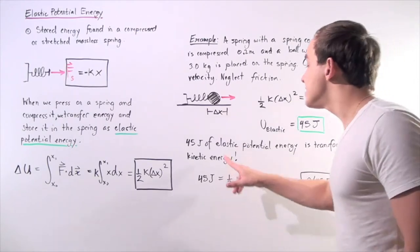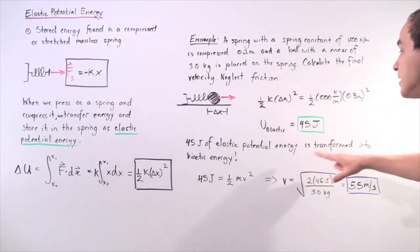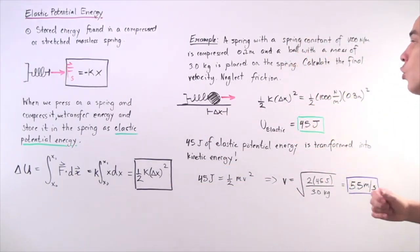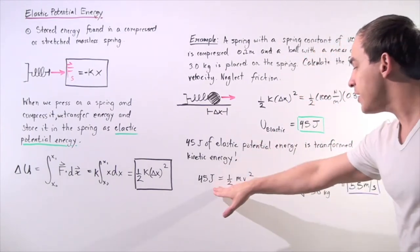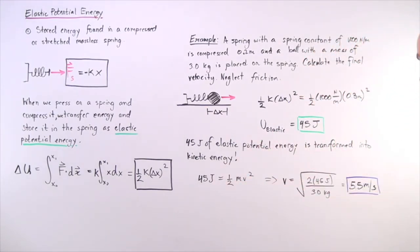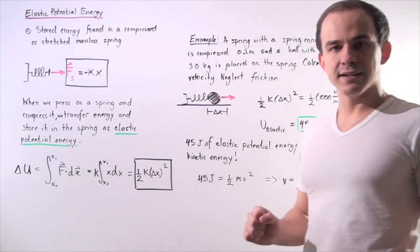Why? Because this entire amount of elastic potential energy will be transformed to kinetic energy. So we equate these, solve for velocity, and see that the velocity of the object is approximately 5.5 meters per second.